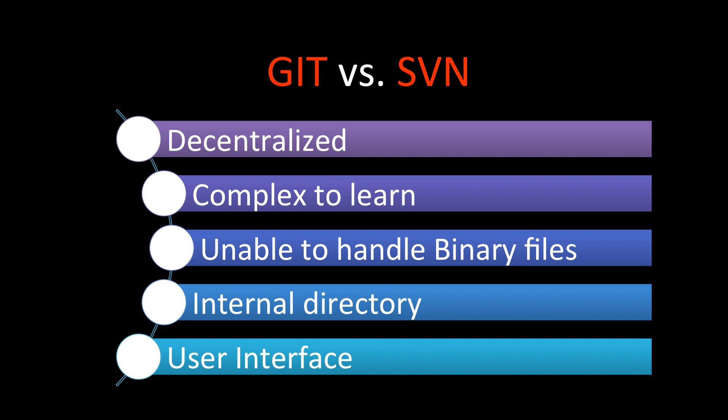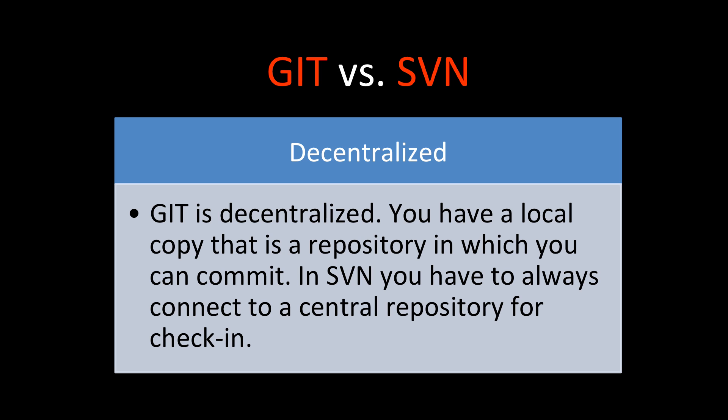The main differences between Git and SVN are: decentralized architecture, complex to learn, inability to handle binary files, internal directory structure, and user interface. Let's understand these one by one. First, Git is decentralized whereas SVN is a centralized system.